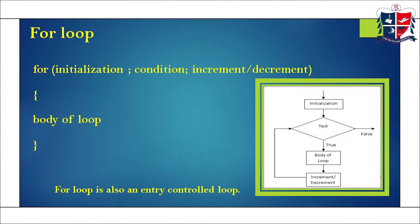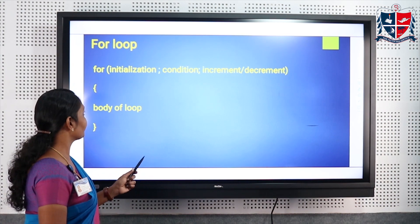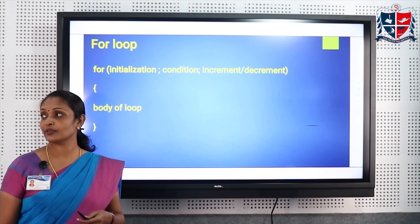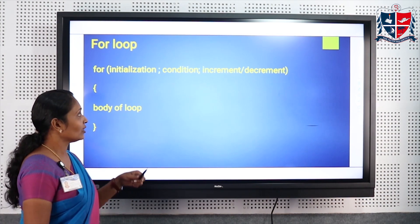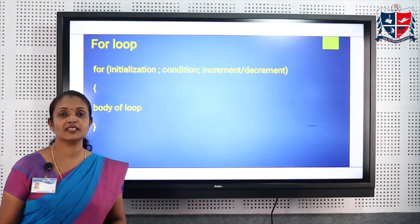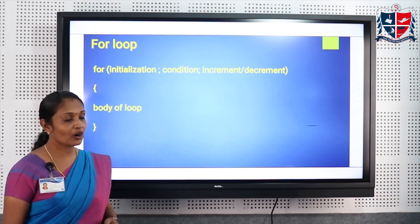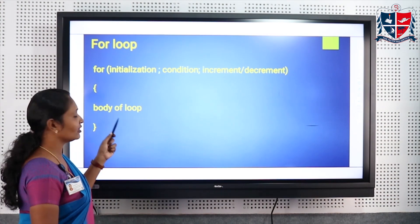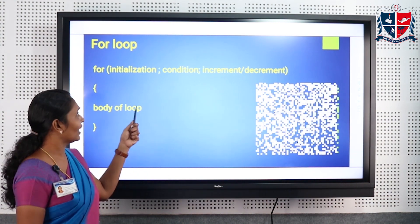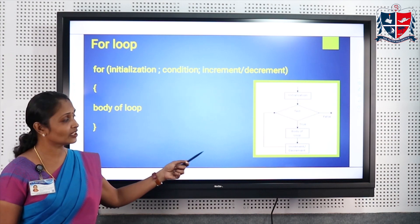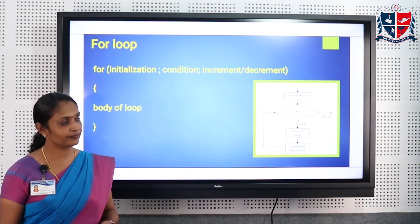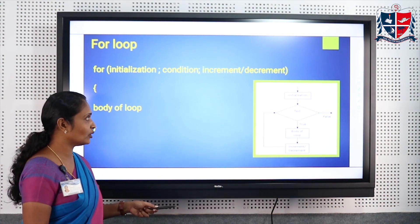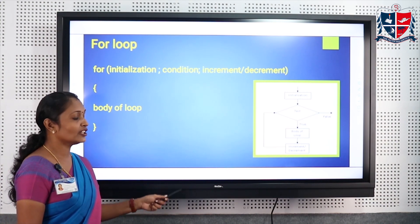The third looping statement used in C programming language is the for loop. In a for loop we have three parts: initialize the variable, check the condition, and increment or decrement the counter — all included in a single line. In the case of do-while and while loops we perform all three steps sequentially, but in the case of for loop all three parts are in a single line: initialization, condition, increment or decrement, and then the body of the loop. This process continues until the condition becomes false.